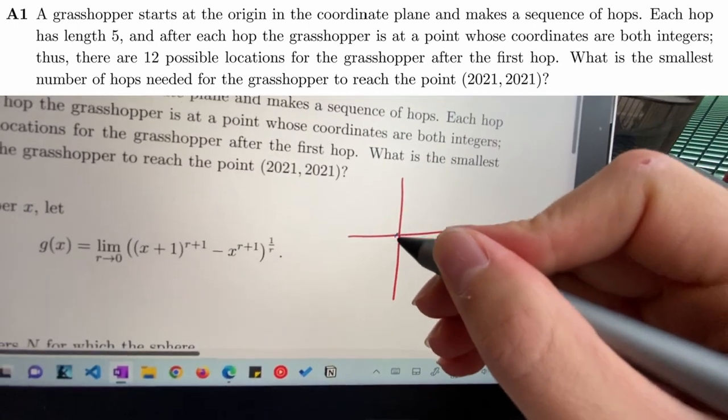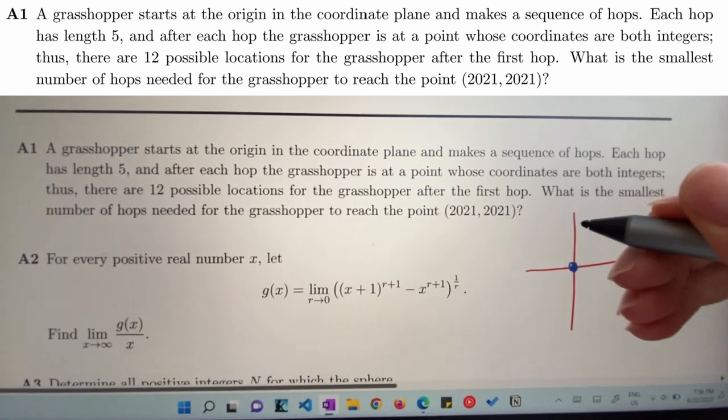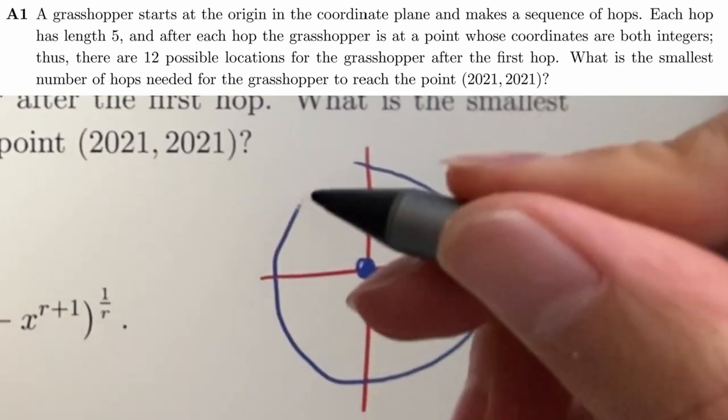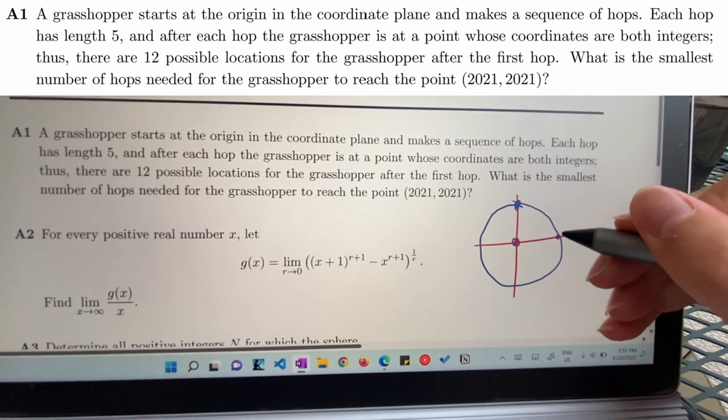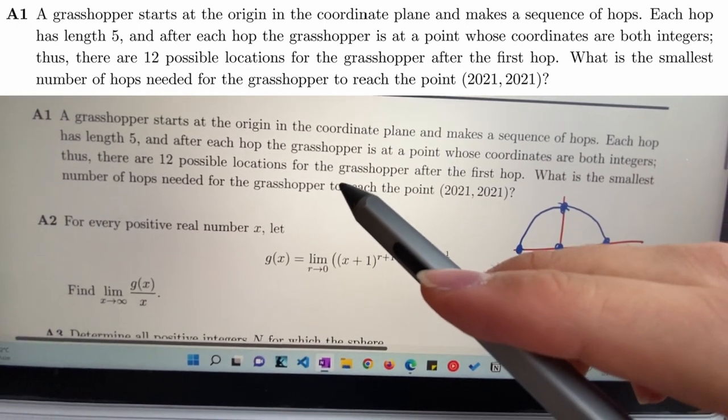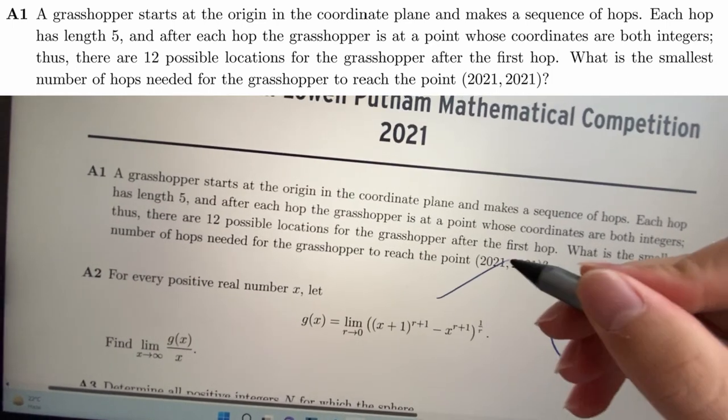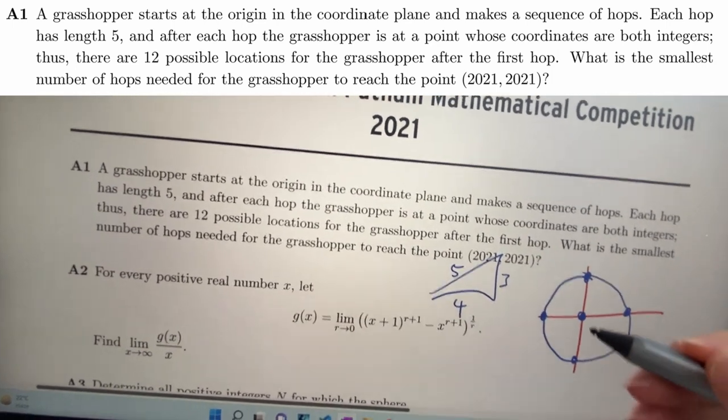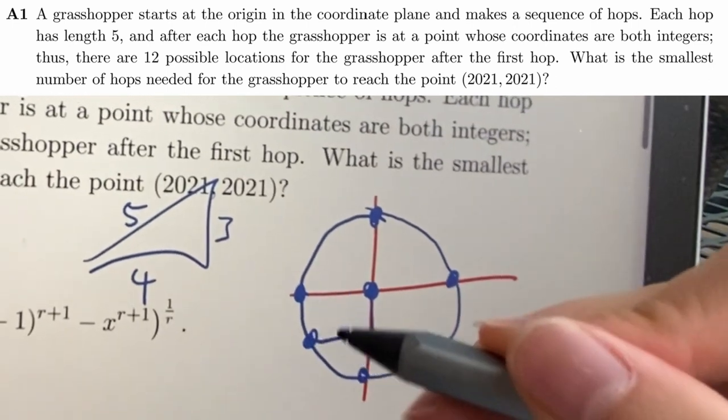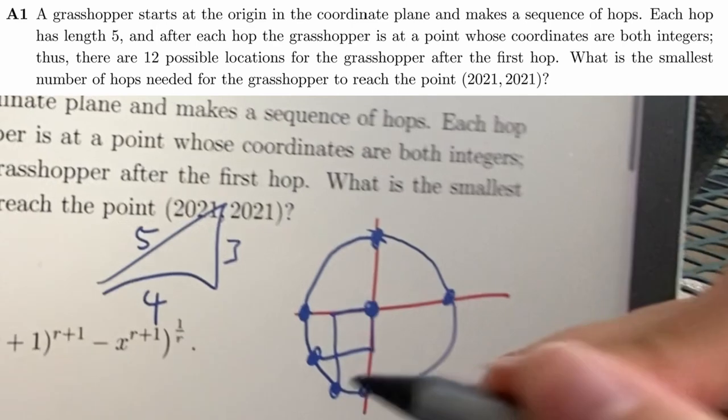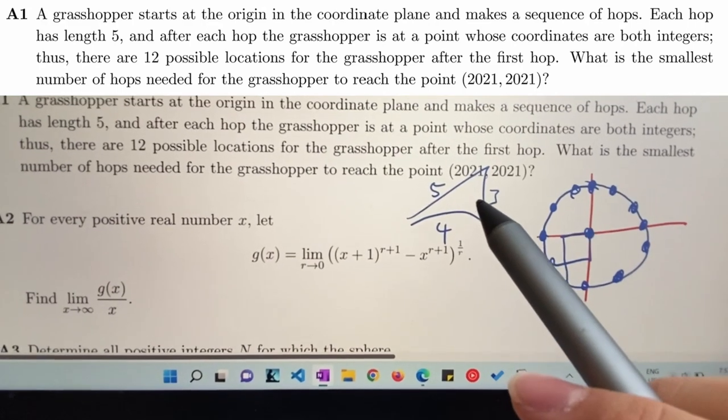Grasshopper dude starts at the origin. And then he makes a sequence of hops of length five. So he's got like a radius of five that he can hop to. But it needs to be integers. So obviously he can hop here, here, thus there are 12 possible locations for the grasshopper after each hop.